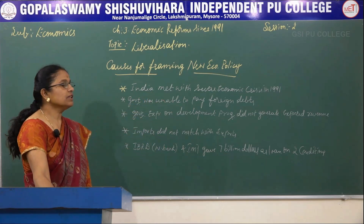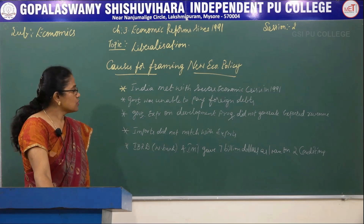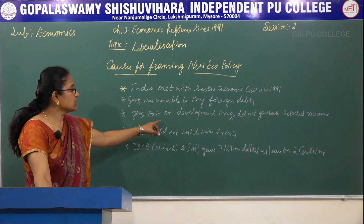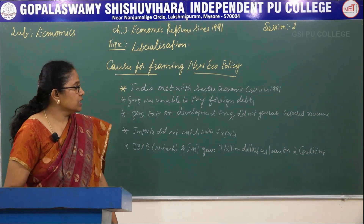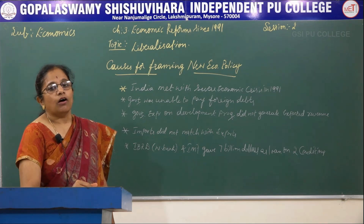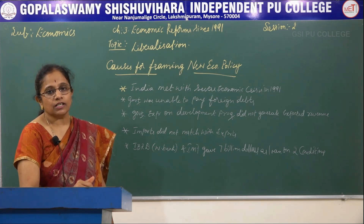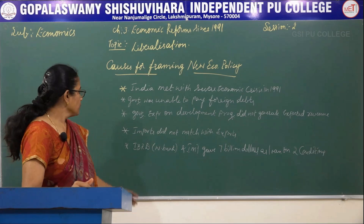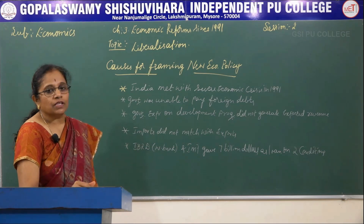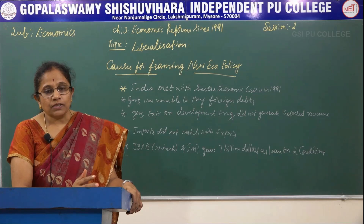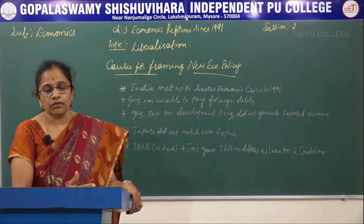India met with a severe economic crisis since 1991, so the government was unable to pay foreign debts. The next cause is that government expenditure on development programs did not generate the expected revenue. Whatever was invested by the government on developmental activities did not generate the expected revenue, leading to a deficit. Imports did not match with our exports — the amount of imports did not match what we were exporting, and we had only few exports.